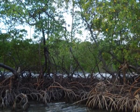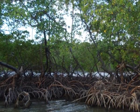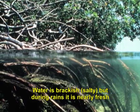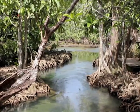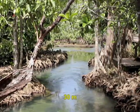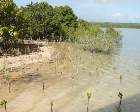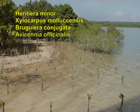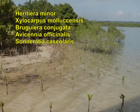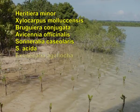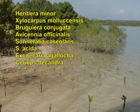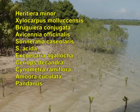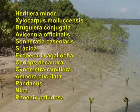Brackish water mangrove forests grow near river deltas where the forest floor is flooded with water at least for some time daily. Water is brackish — salty — but during rains it is nearly fresh. Tree height may reach 30 meters and the forest is dense. Common species include Heritiera minor, Xylocarpus moluccensis, Bruguiera conjugata, Avicennia officinalis, Sonneratia acida, Excoecaria agallocha, Ceriops decandra, Cynometra ramiflora, Amoora cucullata, Pandanus, and two palms — Nypa fruticans and Phoenix paludosa.